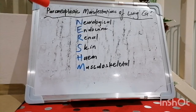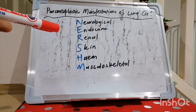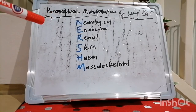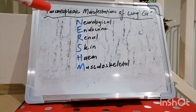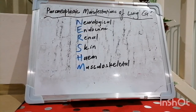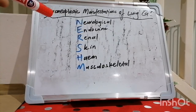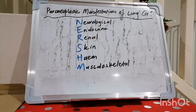Hypercalcemia occurs on the basis of numerous pathophysiological mechanisms. Number one, the most common, is the elaboration of too much PTH-related peptide, which leaches the bone and liberates calcium. Number two is local bony osteolysis, which also liberates calcium into the bloodstream. Number three is the elaboration of too much 1,25-dihydroxycholecalciferol vitamin D, which occurs not only in lung cancer but also in granulomatous conditions like sarcoidosis.